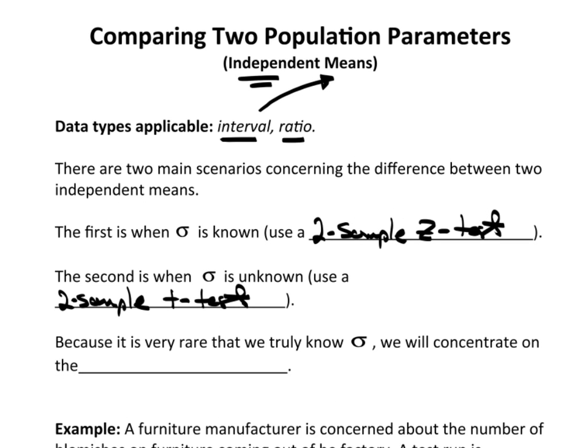Your book talks about how to do a two-sample z-test. I'm not going to even do it here, because in reality, when do you know sigma? So we're going to concentrate on the two-sample t-tests.